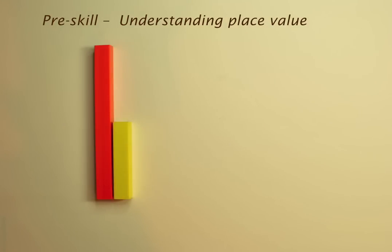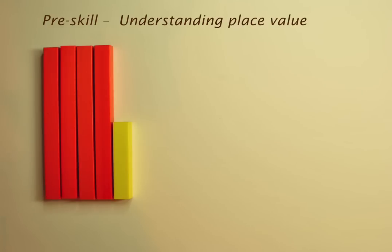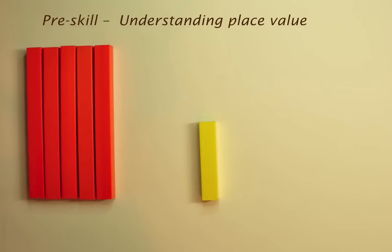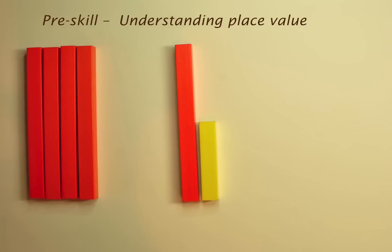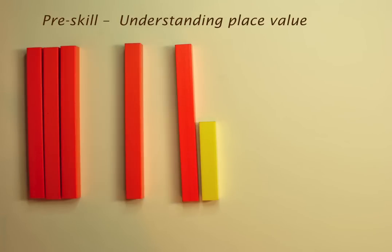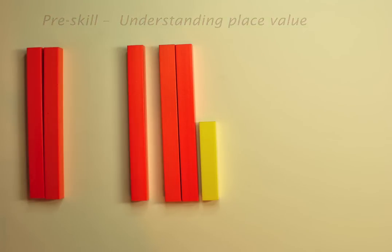Still on the subject of place value, we need to know how to build or partition two-digit numbers. For example, 55 can be split into 50 and 5, or 40 and 15, or 30 and 25, and so on.